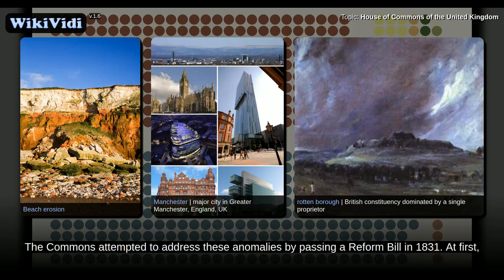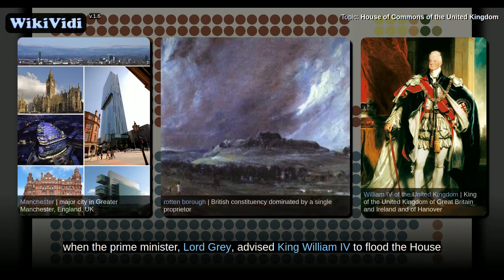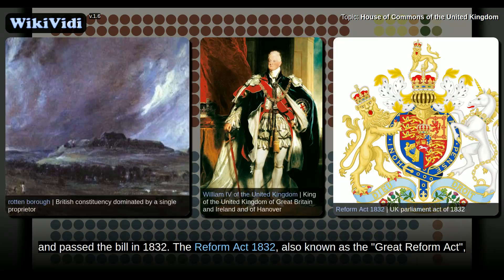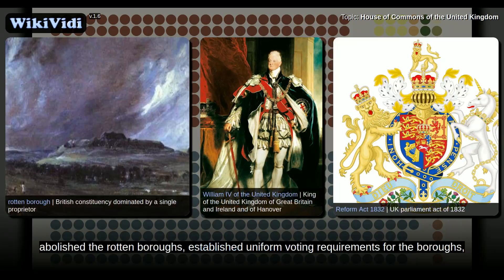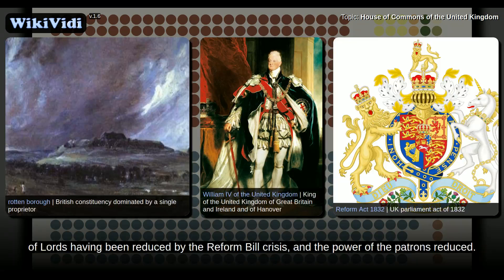The Commons attempted to address these anomalies by passing a reform bill in 1831. At first, the House of Lords proved unwilling to pass the bill, but were forced to relent when the Prime Minister, Lord Grey, advised King William IV to flood the House of Lords by creating pro-reform peers. To avoid this, the Lords relented and passed the bill in 1832. The Reform Act 1832, also known as the Great Reform Act, abolished the rotten boroughs, established uniform voting requirements for the boroughs, and granted representation to popular cities, but still retained many pocket boroughs. In the ensuing years, the Commons grew more assertive, the influence of the House of Lords having been reduced by the reform bill crisis, and the power of the patrons reduced.